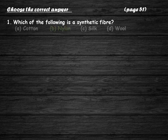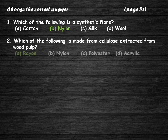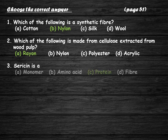Let us discuss the correct answers. The answer to question number one is option B — nylon, because all the rest are natural fibers. The answer to question number two is option A — rayon, which is a semi-synthetic fiber obtained from wood pulp. The answer to question number three is option C — protein; sericin is a protein found in silk.